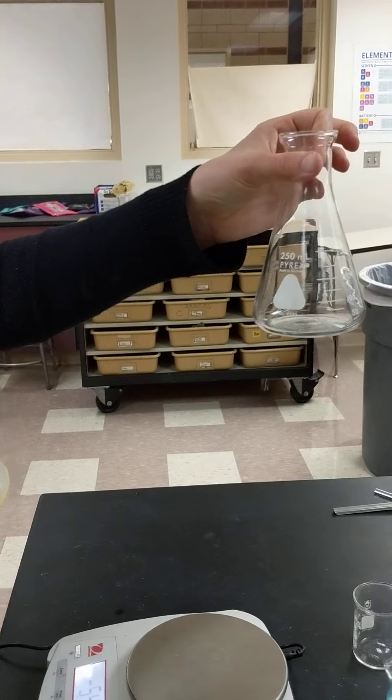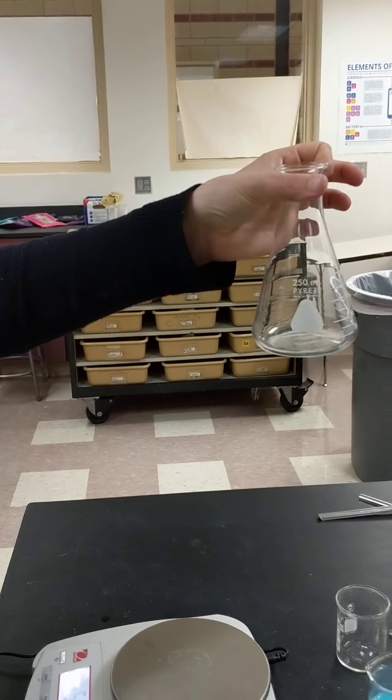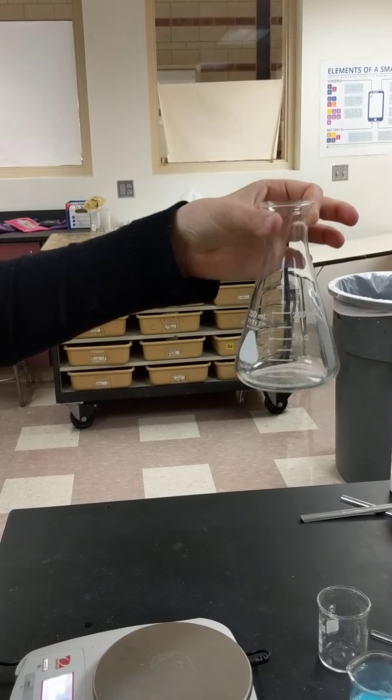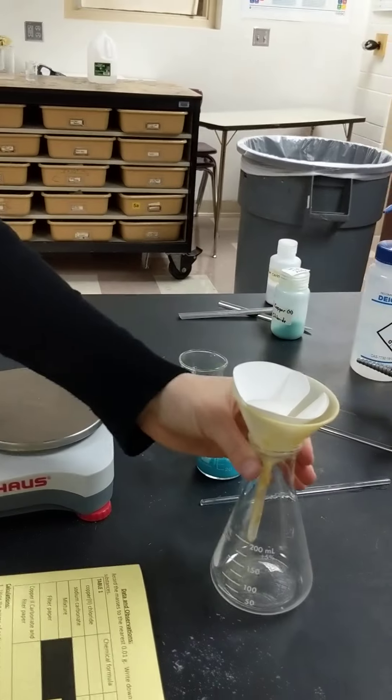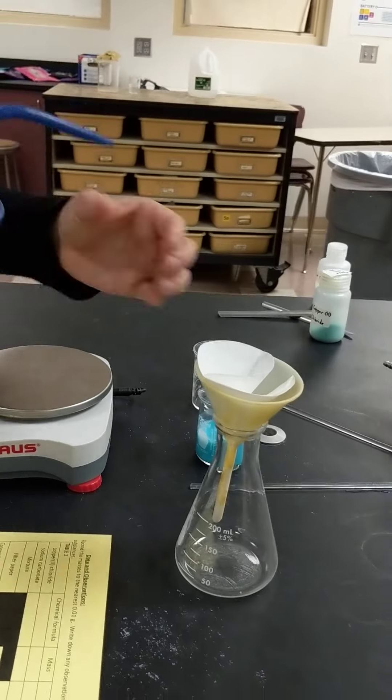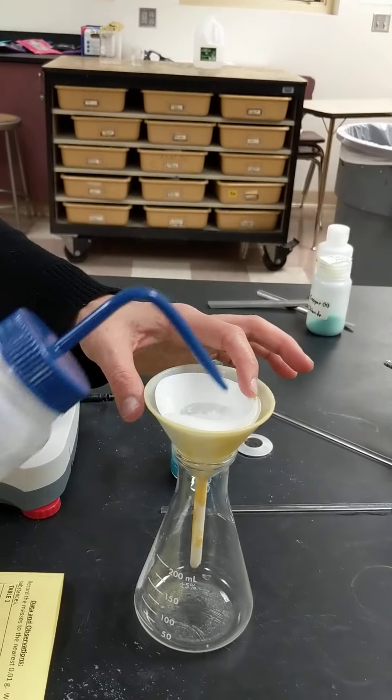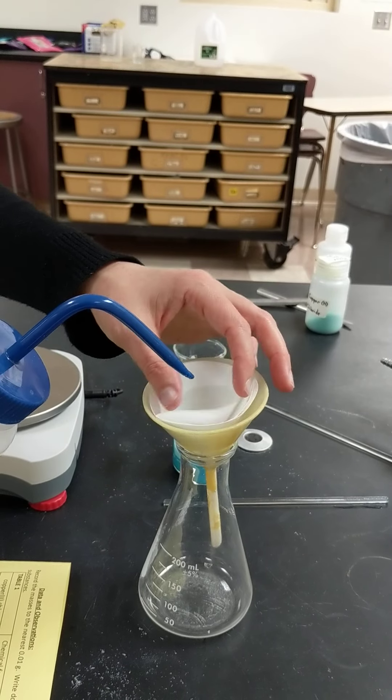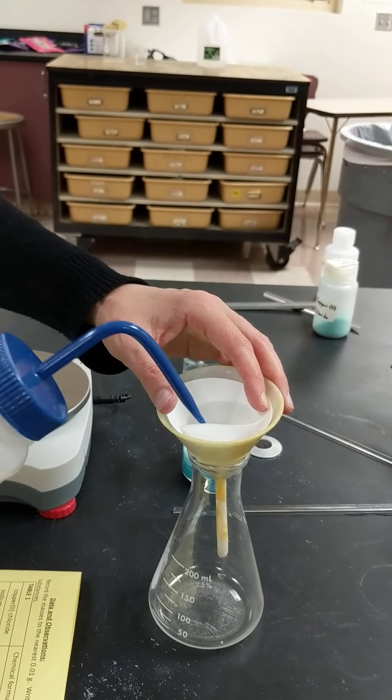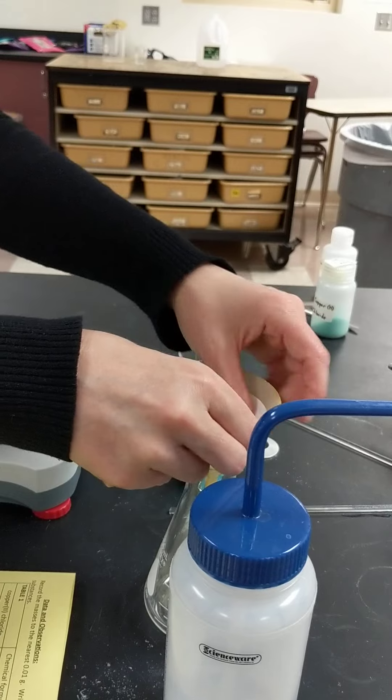And it's going to go into an Erlenmeyer flask, which we call an E flask, like so. A good chemist will always put a little bit of water in there to kind of hold it down to the sides.